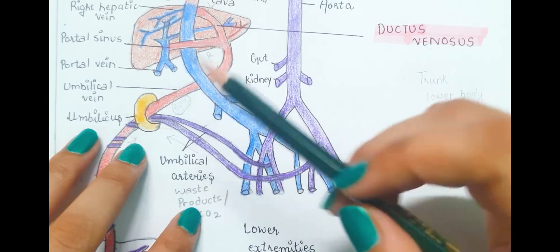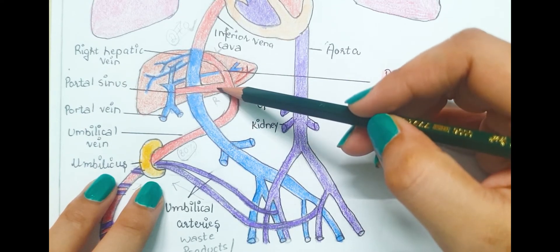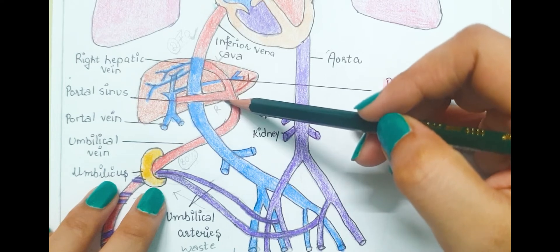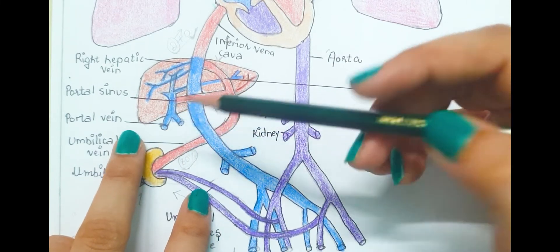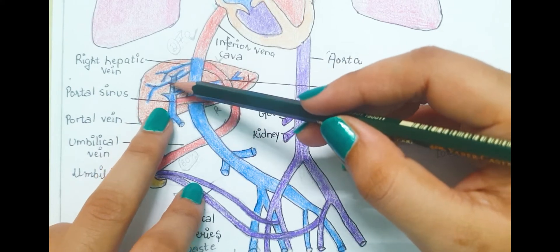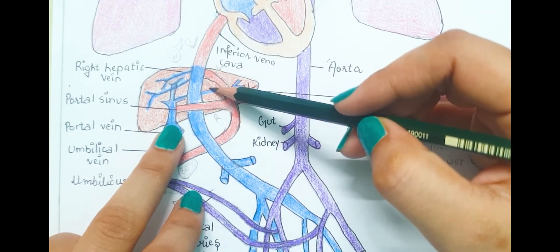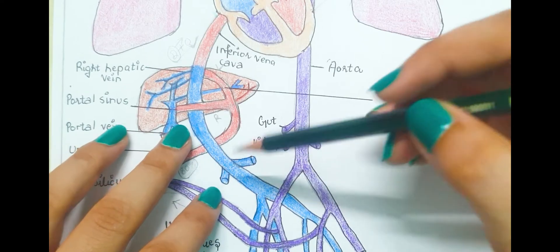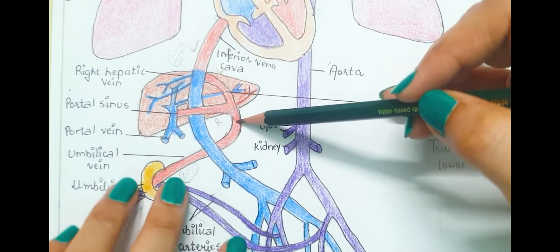At the liver, the umbilical vein divides into two branches: the right umbilical branch and the left umbilical branch. The right umbilical branch enters the liver at its inferior border, passes to the right side, and joins the portal vein, supplying oxygenated blood to the liver. The deoxygenated blood from the liver then enters the inferior vena cava through the hepatic veins. The left umbilical branch, also known as the ductus venosus, passes oxygenated blood from the umbilical vein directly to the inferior vena cava.